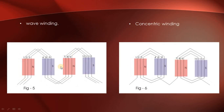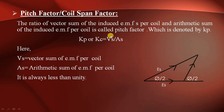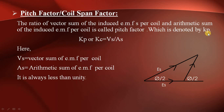In today's lecture we are going to discuss the pitch factor or coil span factor. The pitch factor is defined as the ratio of the vector sum of induced EMFs per coil to the arithmetic sum of induced EMFs per coil. It is denoted by Kp, and the coil span factor is denoted by Kc.